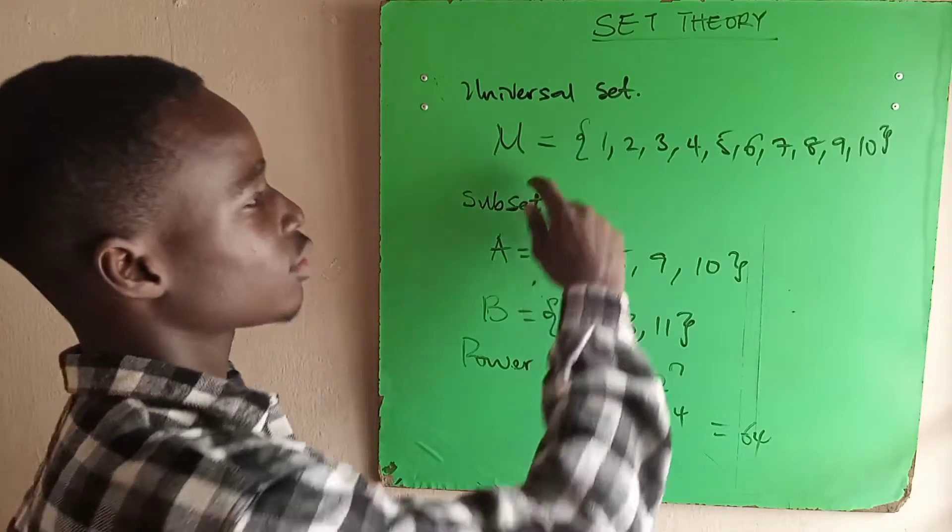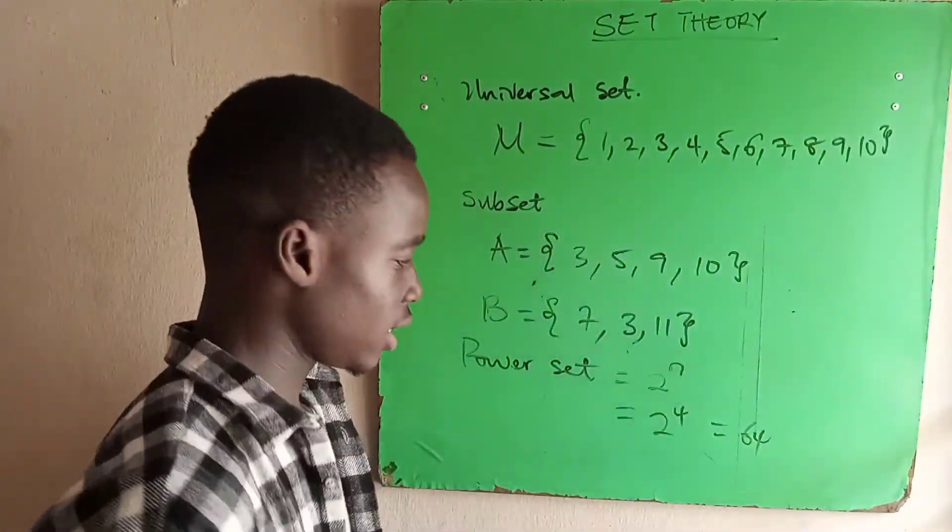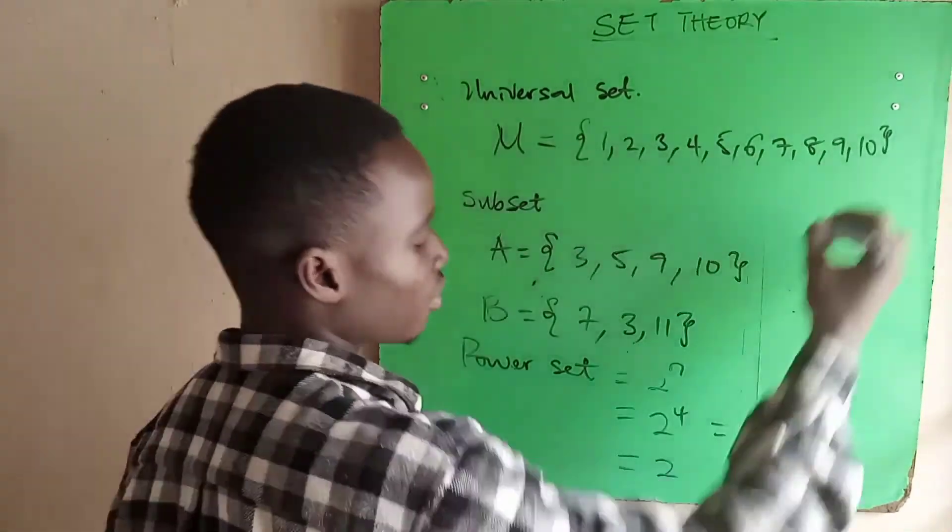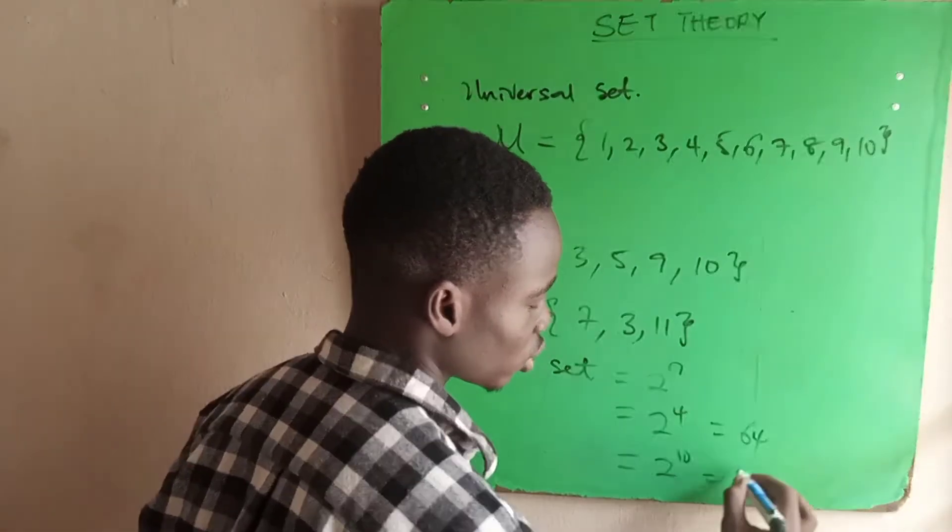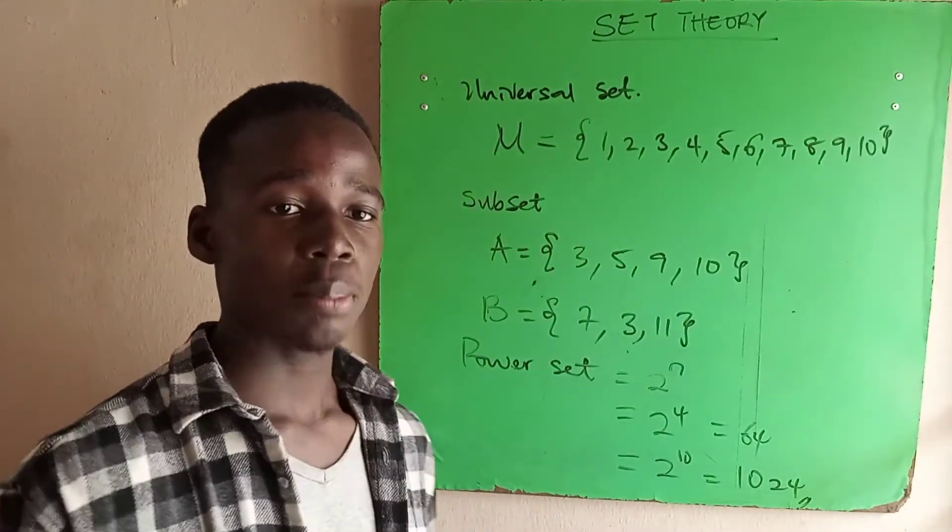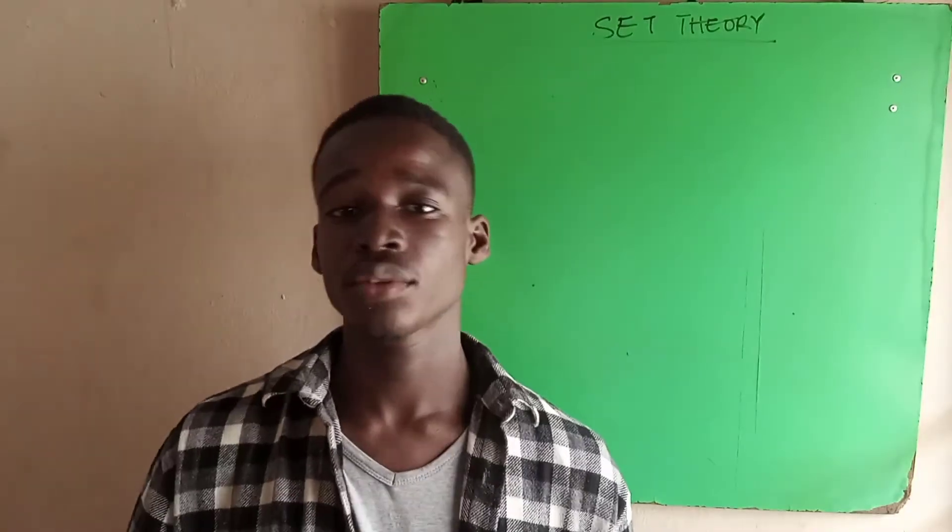If asked to find power set of the universal set, we count all the elements. Once it's down to 10, the power set becomes 2 raised to power of N. N is the number of elements, 2 raised to power of 10, which equals 1024. Next, we will move on to solving questions.